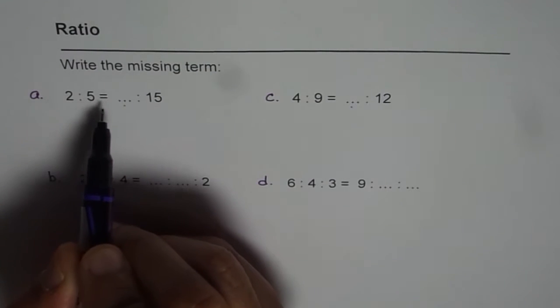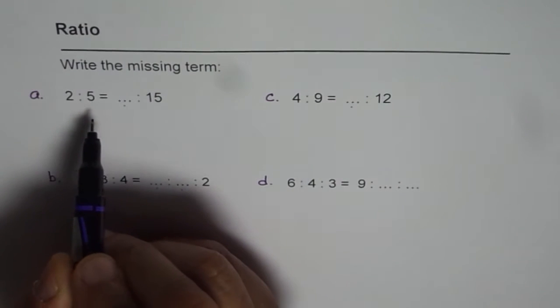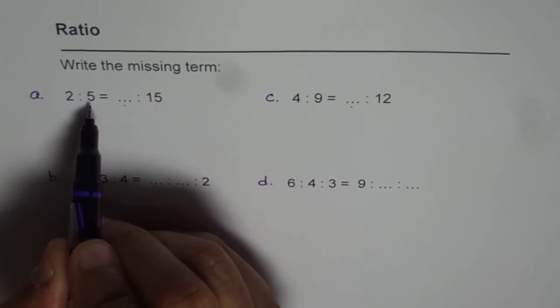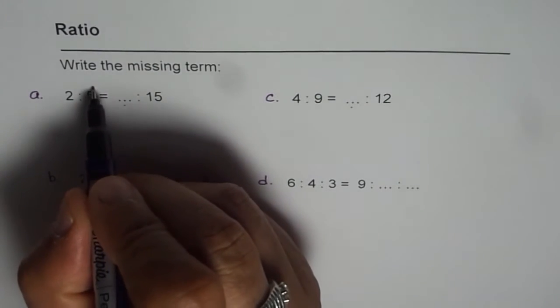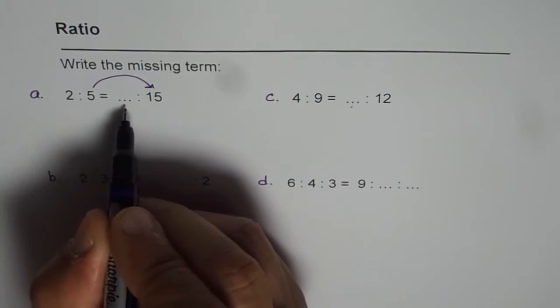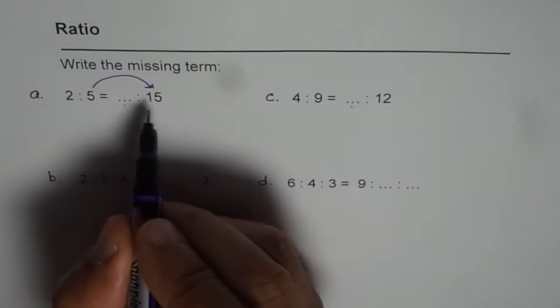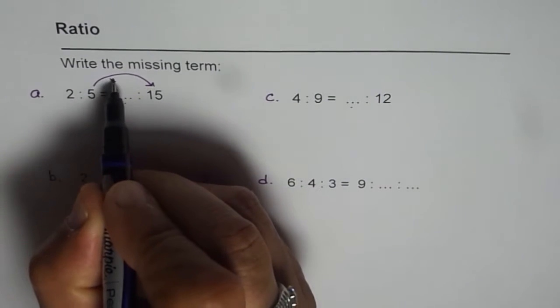So we have 2 is to 5 equals to something is to 15. Now we are given one ratio that is 5 is to 15. Now how do you get 15 from 5? This is what you have to figure out. Then you can find how you are going to get the first term. Now from 5 to 15 you can get by times 3.